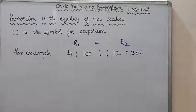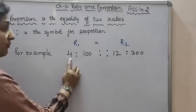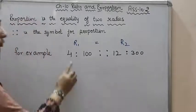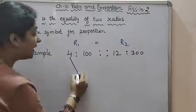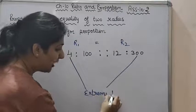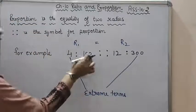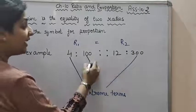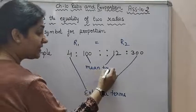Now in proportion there are four terms. In ratio we had two terms. Now what do we call these terms? The last terms - there are four terms: one, two, three, four. The first and fourth term, we call them extreme terms. And the middle ones, the two terms - term two and term three - they are called mean terms.